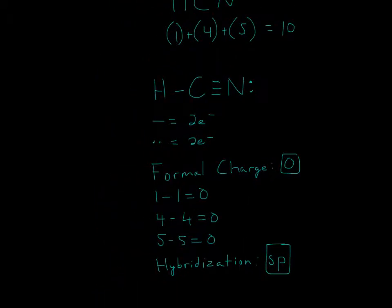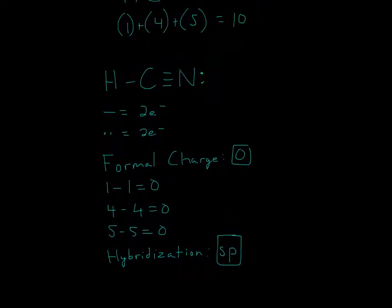Now moving on to hybridization. Hybridization will be SP for both of these, for carbon and for nitrogen, because it has two domains. Now notice that this is different from formal charge. How we count it is different, because we have 1, 2, two domains for carbon.